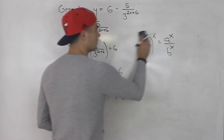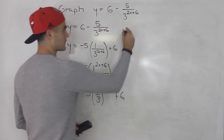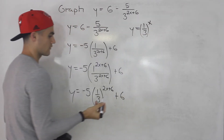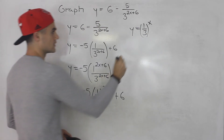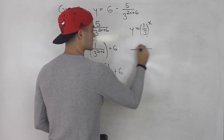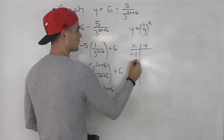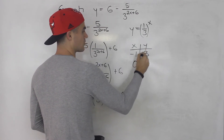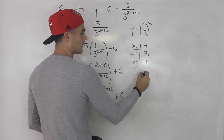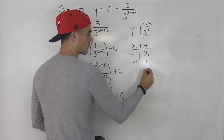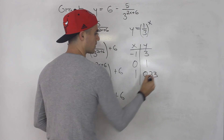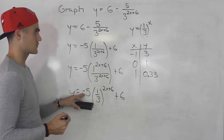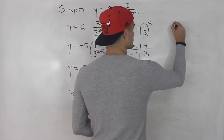We can now identify the base function as (1/3)^x. The parent table uses x values of negative 1, 0, and 1: (1/3)^(−1) = 3, (1/3)^0 = 1, and (1/3)^1 = one third, or approximately 0.33. That's the base function we'll be transforming.